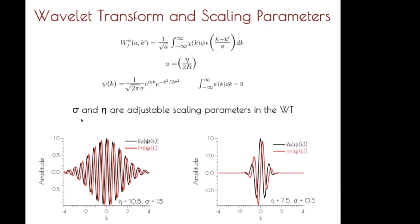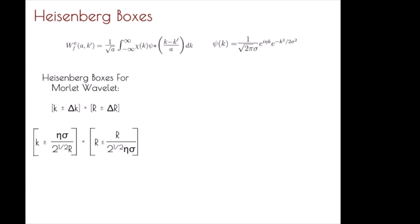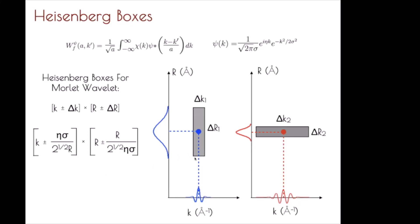Getting to resolution, we have to worry about both resolution in R and K space in these two-dimensional transforms, and these are going to be inversely related, based on those sigma and eta parameters as well as your position in R. The resolution varies across the transform. As you gain resolution in K space, you're going to lose resolution in R space, and inversely, as you gain resolution in R space, you're going to lose resolution in K space.